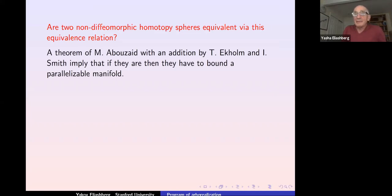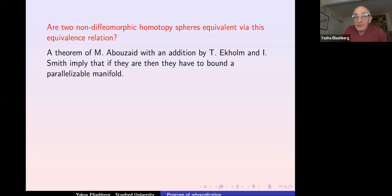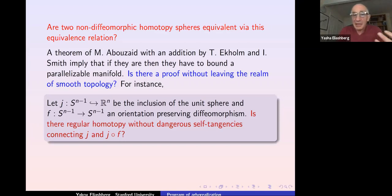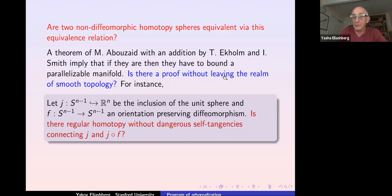For instance, two non-diffeomorphic homotopy spheres obtained by gluing two discs are equivalent via this equivalence relation. As a corollary — a theorem of Mohammed Abu Zaid with improvements by Tabiasek, Holman, and Iron Smith — if they are equivalent then the homotopy sphere must bound a parallelizable manifold. It is unknown whether they must be diffeomorphic or not. The open question is whether this can be proved without leaving smooth topology.